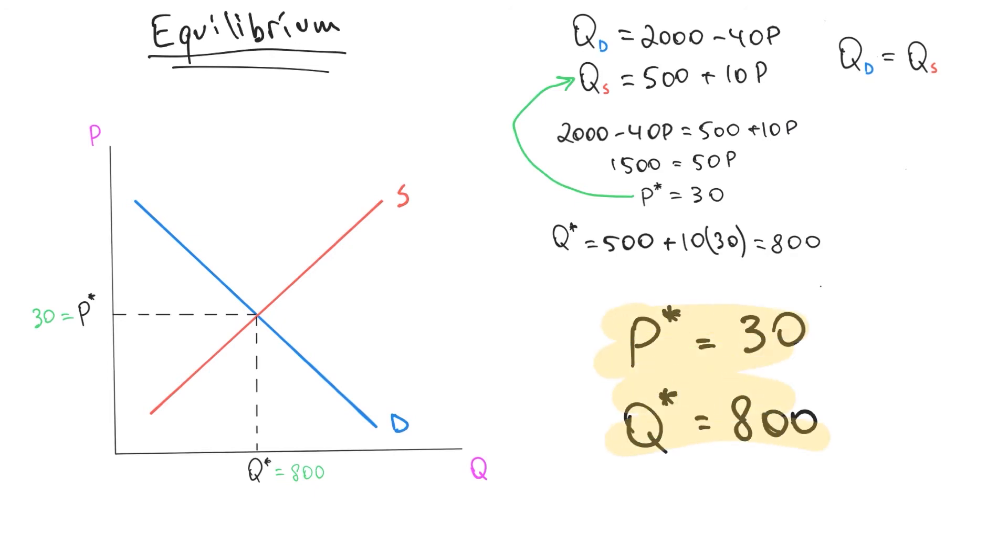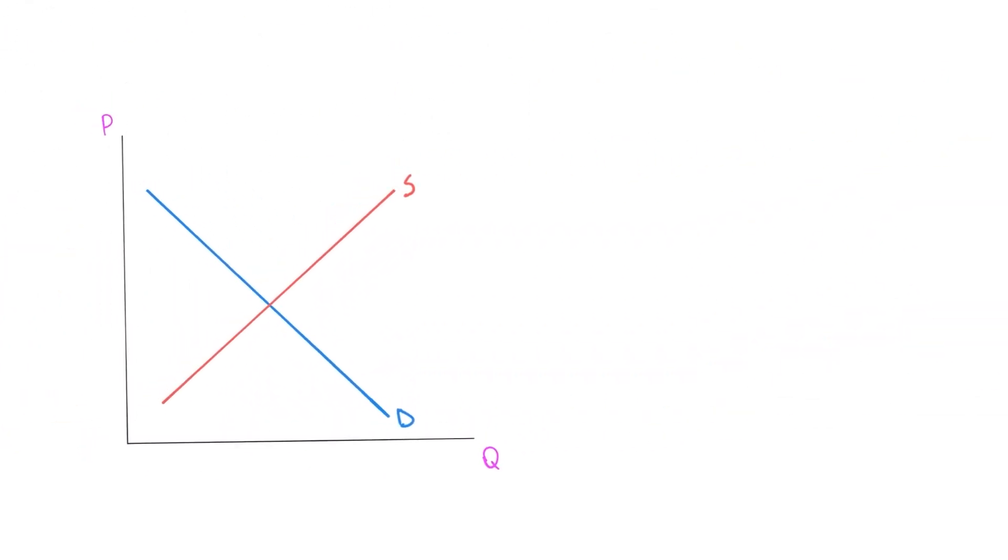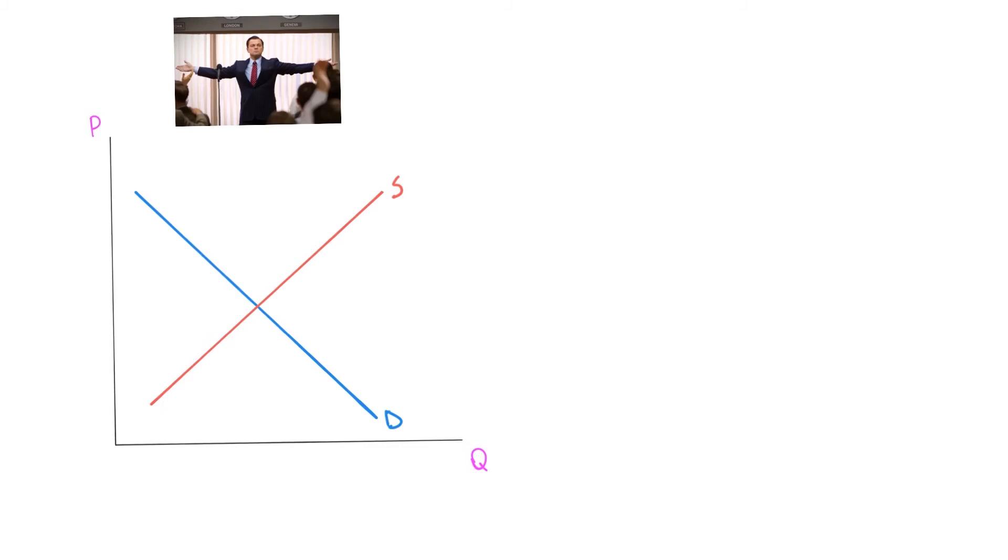Now what if we have another situation where all of a sudden people get richer in this economy. Things are going well, people are making more money, so the demand curve will go up, it will increase. And the new equation, let's say it will be 3000 minus 40p. And the quantity of supply equation will stay the same. 500 plus 10p. What will be the new optimal price and quantity?